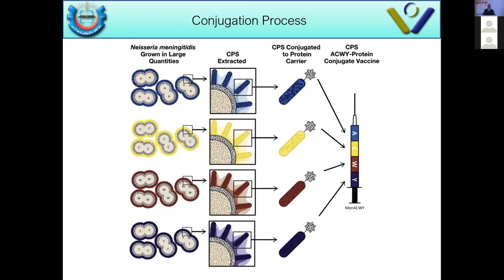With the conjugate vaccine era for Haemophilus, meningococcal, and Streptococcus pneumoniae, the polysaccharide capsule of Neisseria meningitidis is extracted and attached to a carrier — called the hapten — which is usually a protein. This hapten converts the type of immunity produced to a cell-mediated immunity with memory cells, resulting in more antibody production, more robust and longer-lasting immunity compared to polysaccharide vaccines alone.